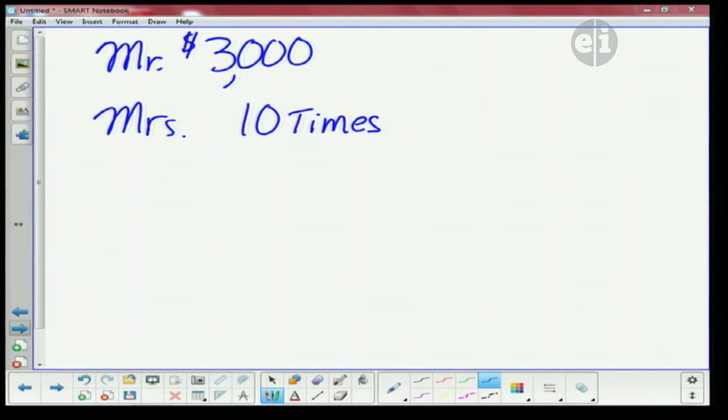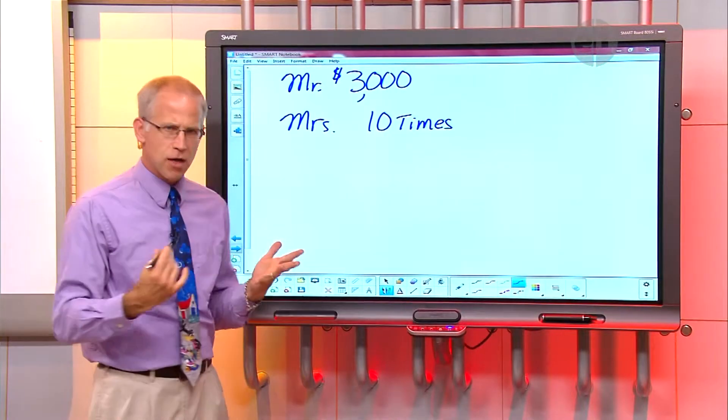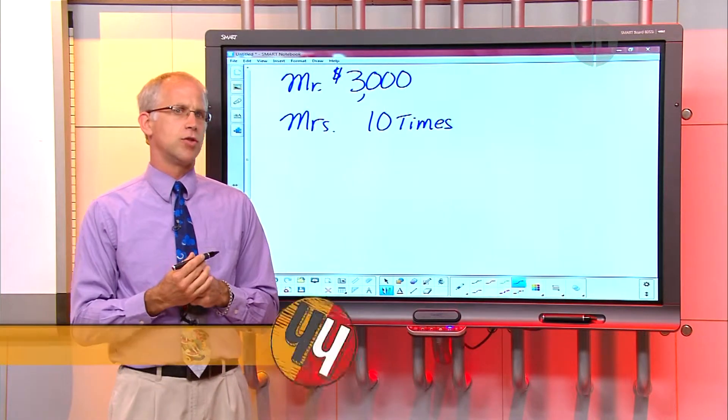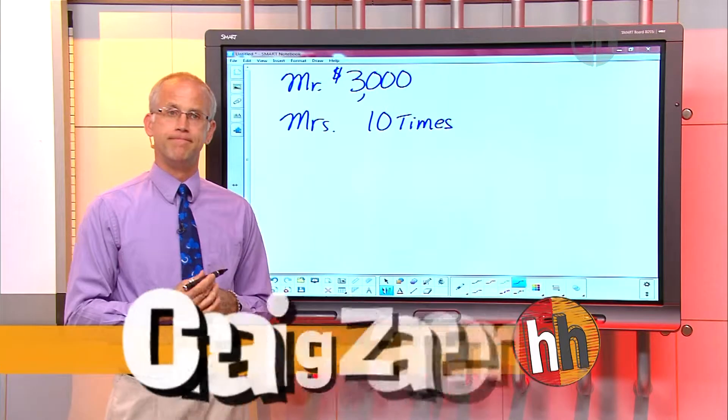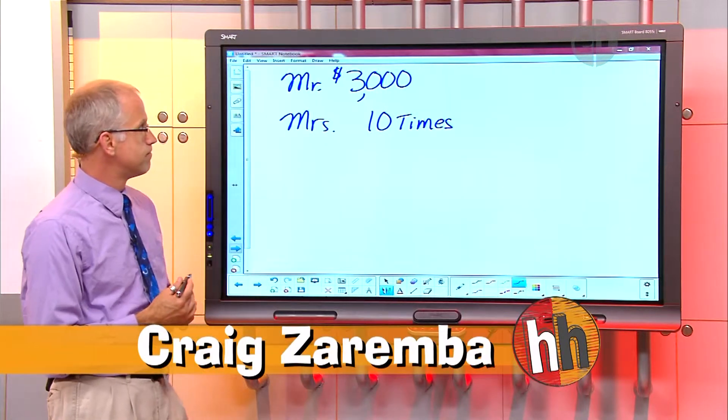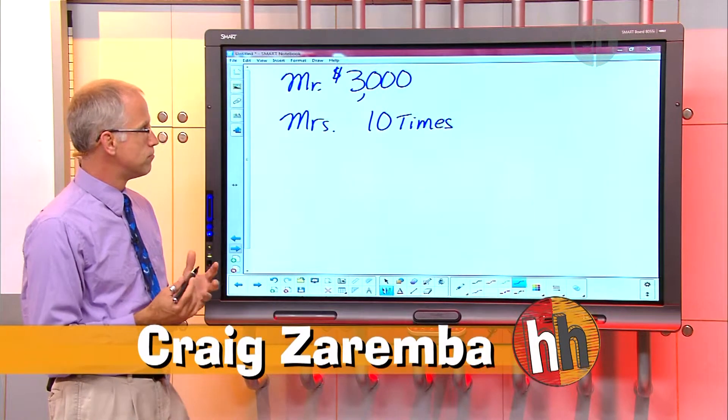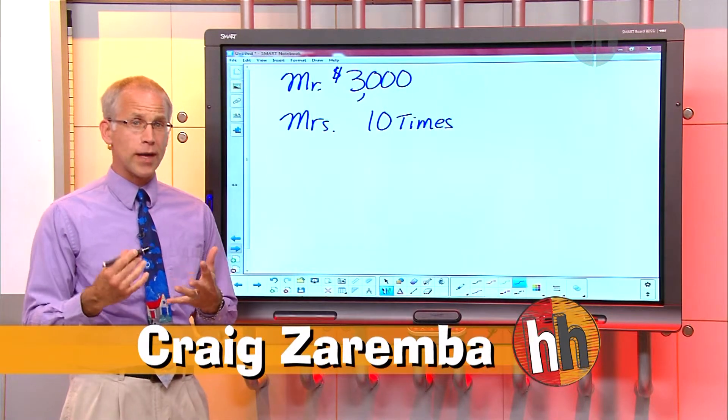Alright, so what do you think we have to do Alicia to solve this question? Um, multiply. Alright, and how are we gonna do that? Because we have three thousand and Mrs. Nelson has ten times as much. So what are we gonna have to do? We can multiply ten times three thousand. Alright, or three thousand times ten, either way.